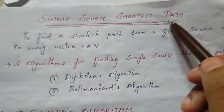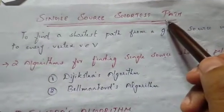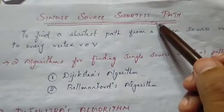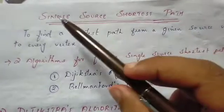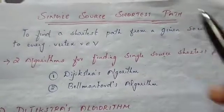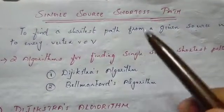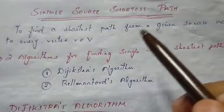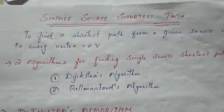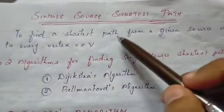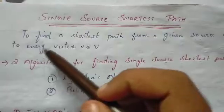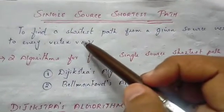This is the single source shortest path. In the last class, we had the minimum spanning tree and Prim's and Kruskal's algorithms. We will now study the next topic: single source shortest path. If you have one source, you can calculate the shortest path from a given source vertex S to every other vertex in the graph.